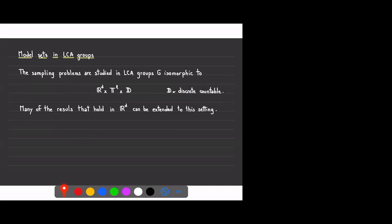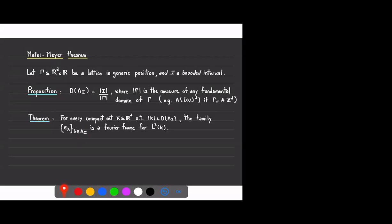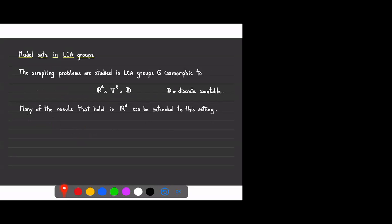To finish, with Matei, Elona Agora, and Carlos Cabrelli, we tried to extend these kinds of results to locally compact abelian groups. The groups in question are those whose dual group is compactly generated. By the structure theorem, these are isomorphic to R^d times the torus T^k times a discrete countable abelian group D. Many results from before can be extended to this setting.